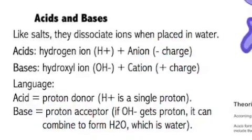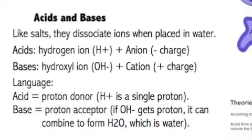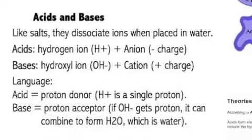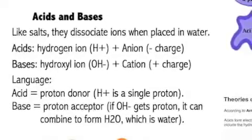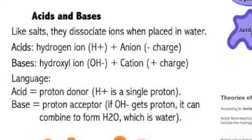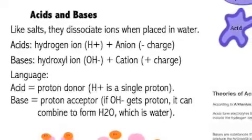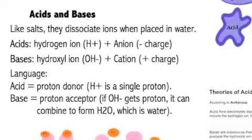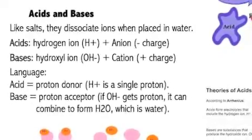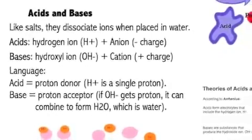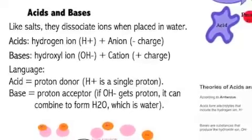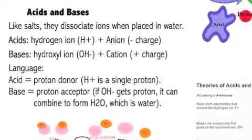Acids and bases are kind of like salts. They dissociate ions when placed in water. In this case, however, the ions are specifically hydrogen ions and hydroxyl ions. When they combine, they form water, H2O. So they are an H+ and an OH-. In a dissociated form, they are very powerful.